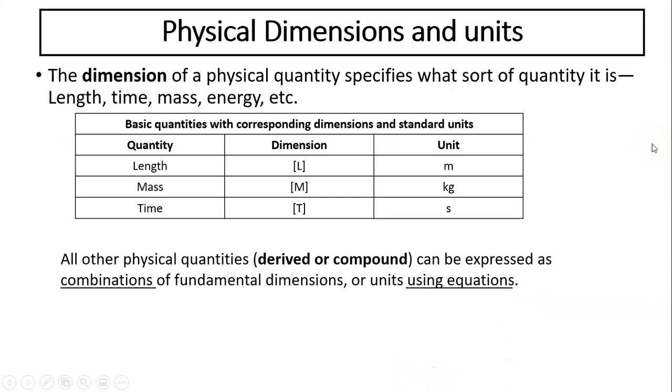The dimension of a physical quantity specifies what type of quantity it is - is it length, time, mass, force, energy, moment of inertia, angle, and so forth.